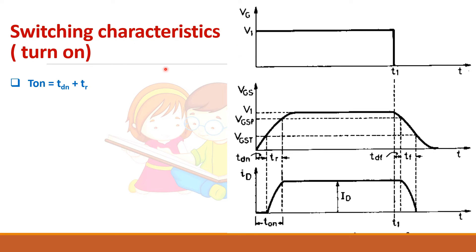For the turn-on characteristics, we need three waveforms: the gate voltage applied, the gate-source voltage across the gate-source terminal, and the drain current. Once gate voltage is supplied, the gate-source voltage shows a curved rising waveform — this is due to the parasitic capacitance being charged. Similarly, during turn-off, the capacitance discharges, producing a discharge curve.